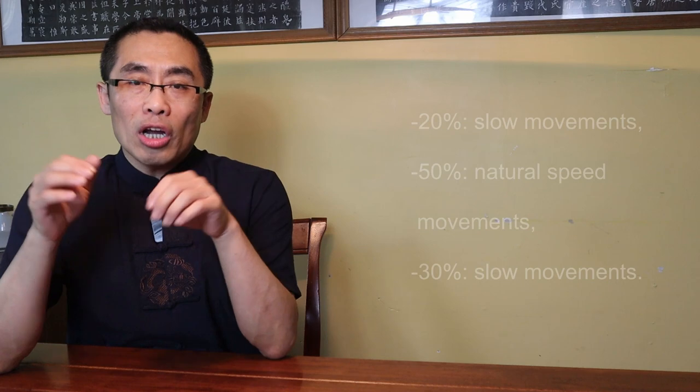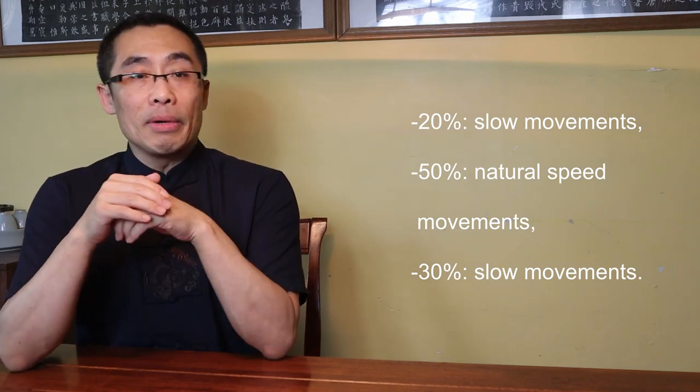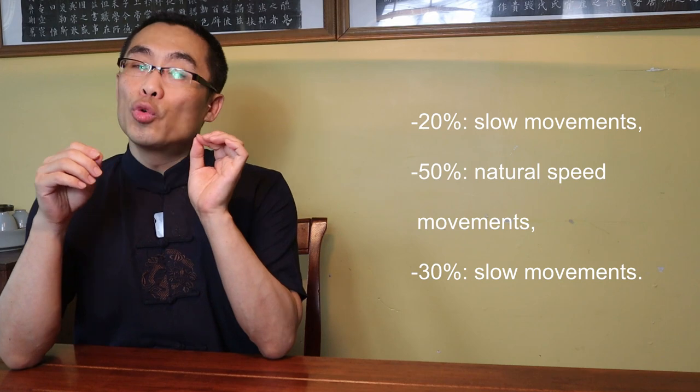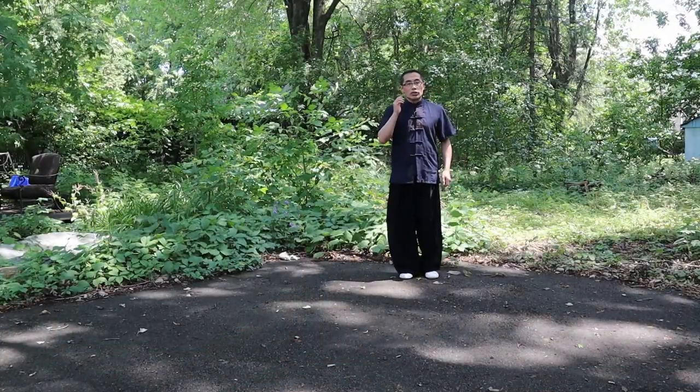Topic 5: Demonstration. Since we are talking about Tang Ni Bu, it's best for me to demonstrate it in today's video. I will use slow movements first, followed by natural speed movements. My suggestion is that you should practice both methods daily. Normally, start with slow movements, then proceed to natural speed movements, and then go back to slow movements. I recommend you dedicate 20% of the time to the first set of slow movements, 50% to natural speed movements, and the remaining 30% to the final set of slow movements. After that, you can work on other practice. Now, slow motion first.